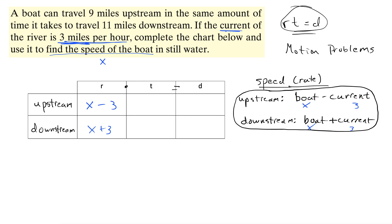These problems all work the same, so once you get the method for one, you get it for all of them — it's worth the extra effort up front. For the distance column: the boat travels 9 miles upstream and, in the same amount of time, 11 miles downstream.